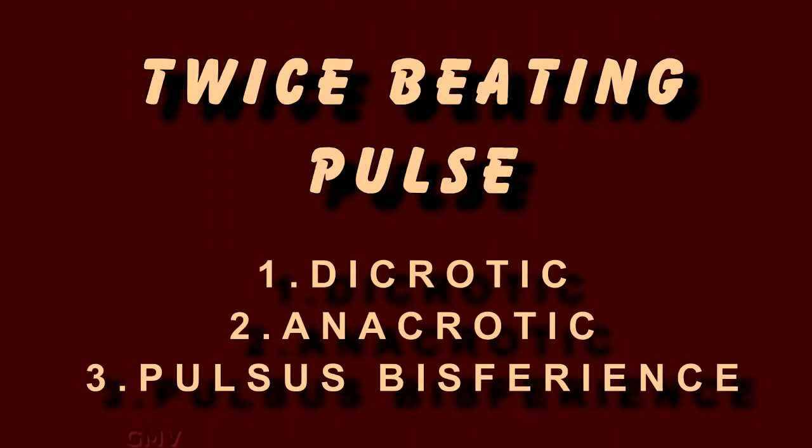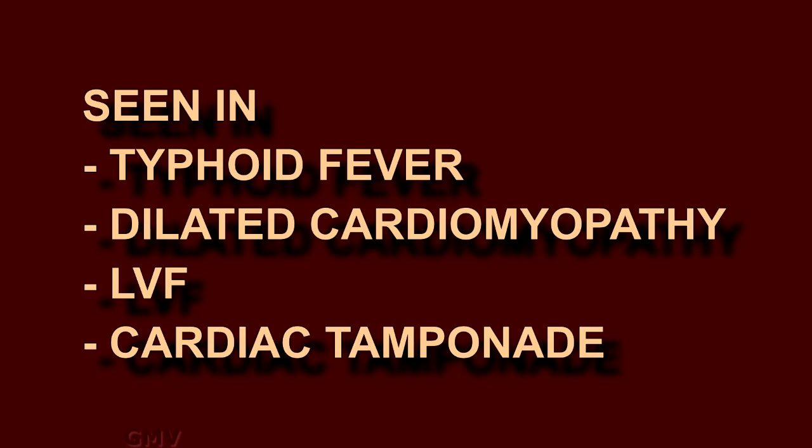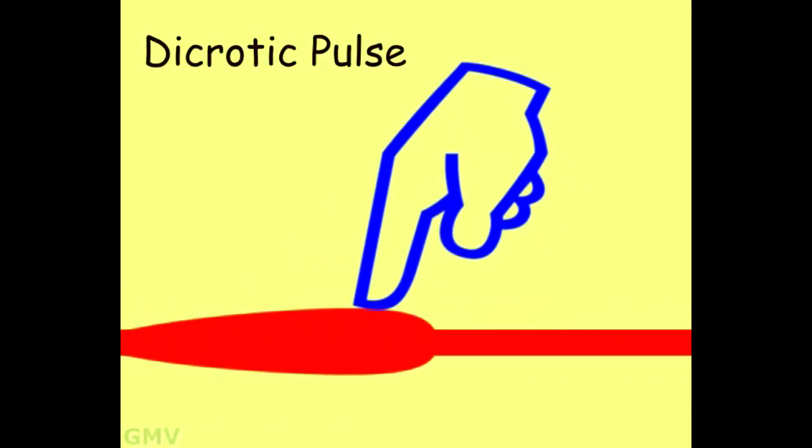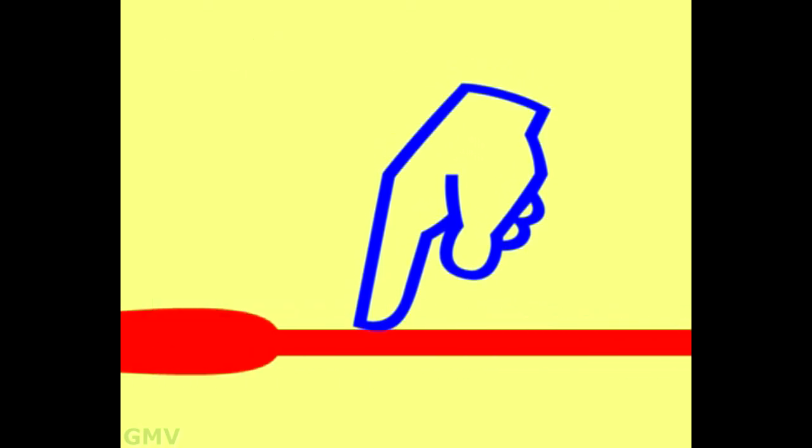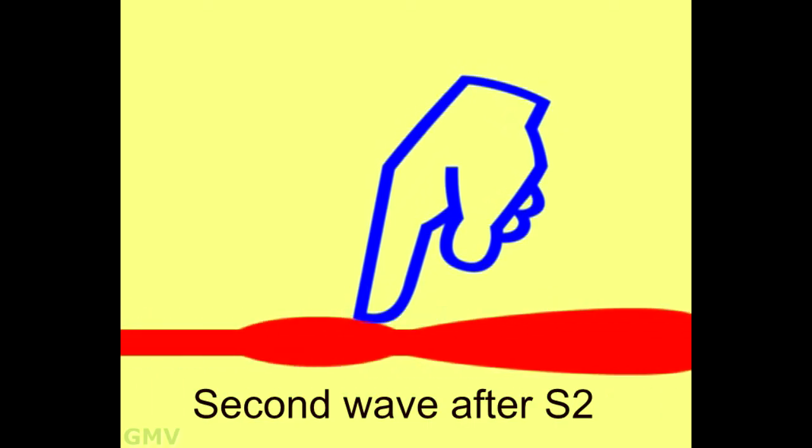Now we will come to twice beating pulse, that is there is an additional wave felt in addition to the normal percussion wave in each cycle. In dicrotic pulse, there are two beats per cycle, one in systole, that is normal percussion wave, and one in early diastole due to high vascular resistance producing an exaggerated dicrotic wave. Watch the finger. This is dicrotic pulse, which beats once in systole and once in diastole immediately after S2.